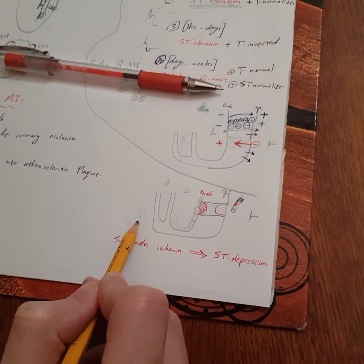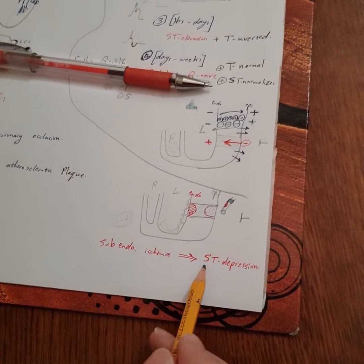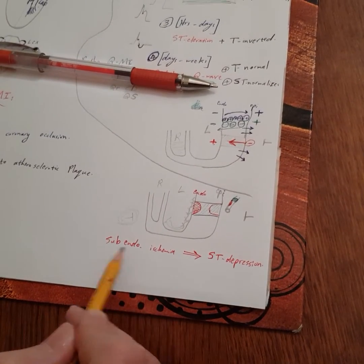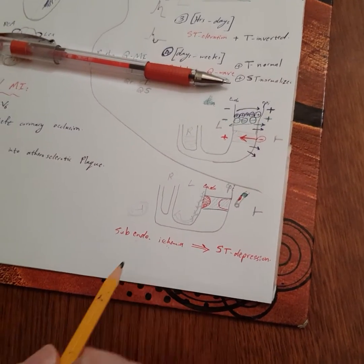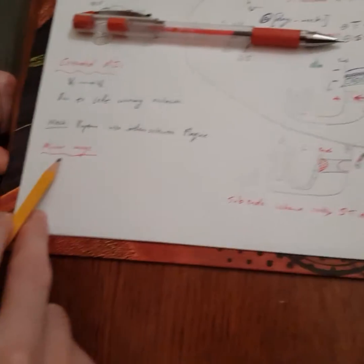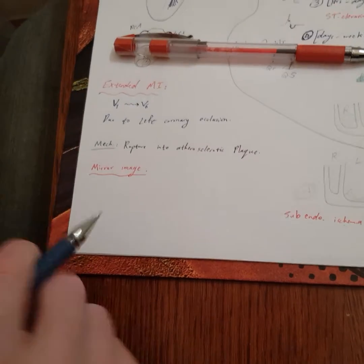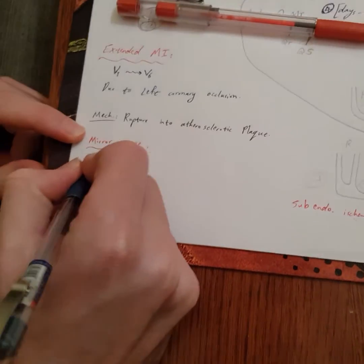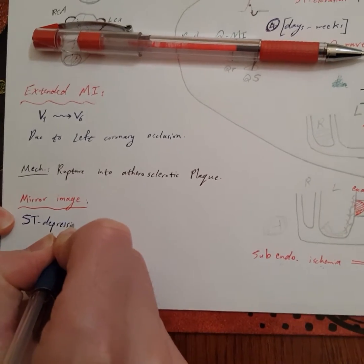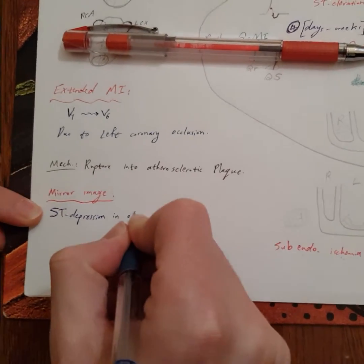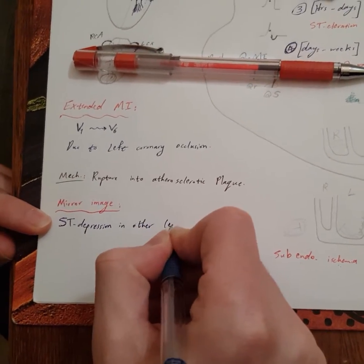Well, if you see only depression and this is your primary sign, then this ST depression is subendocardial ischemia, or you can just say chronic ischemia. This is the mirror image—it's ST depression in other leads than the ones with ST elevation.